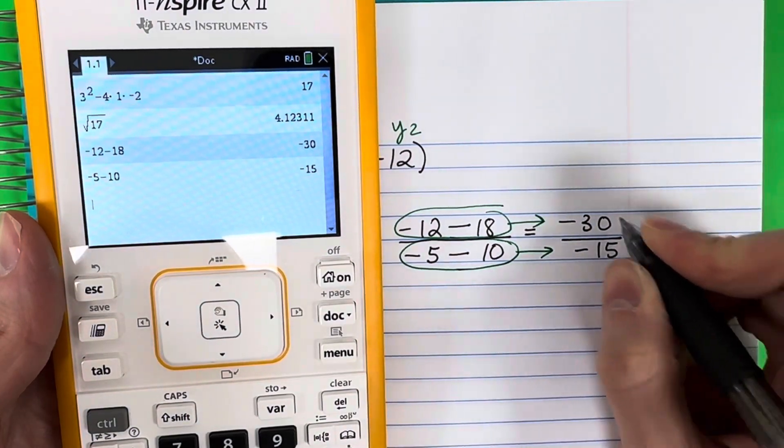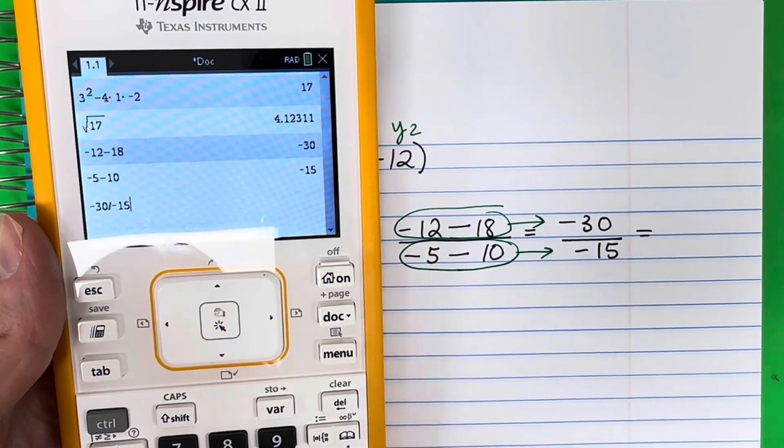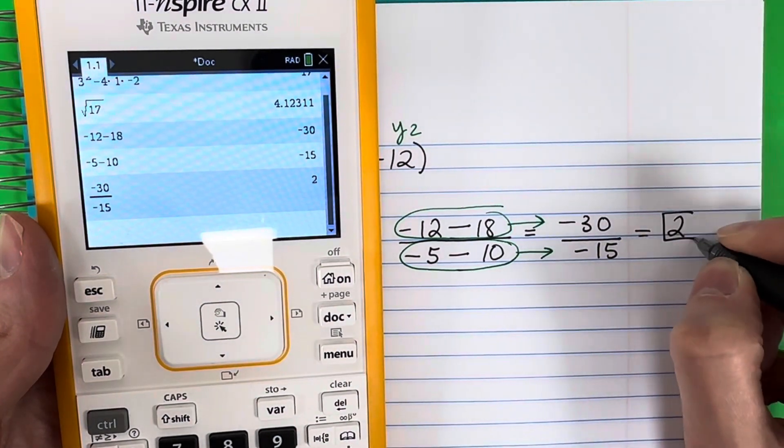Now put it all together. Negative 30 divided by negative 15, that is positive 2. That is your slope.